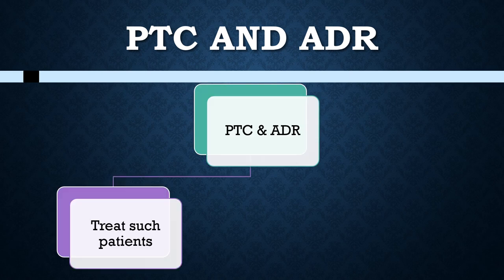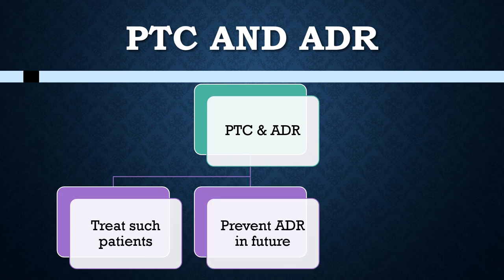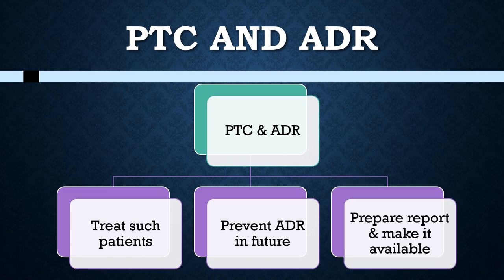First, if there is an adverse drug reaction, it is a primary responsibility of the committee to select a policy for treating such a patient and give guidelines to the pharmacist, nursing station, or the physicians. It must also select guidelines so that such adverse drug reactions should not happen in the future, and make an adverse drug reaction reporting form available at all nursing stations.